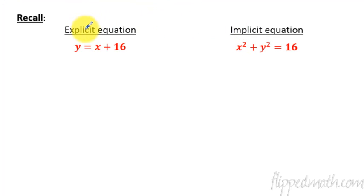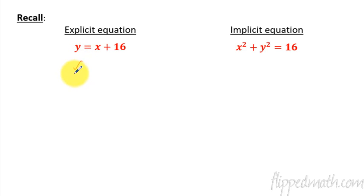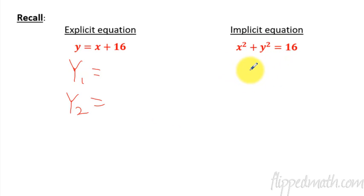What we're used to is explicit equations — not like bad word equations — where we solve for y. If you get y by itself, that's considered explicit. That's what we usually plug into a calculator. We have y1 equals and y2 equals. Those are all explicit equations. But you have other types of graphs and equations in which we don't have y isolated.